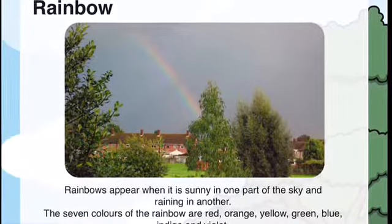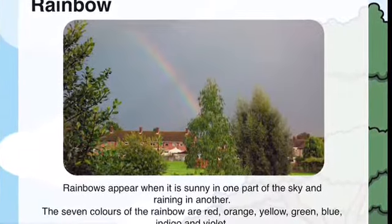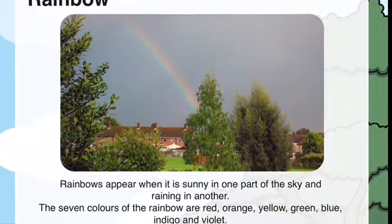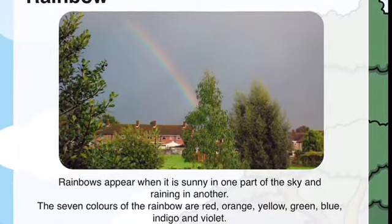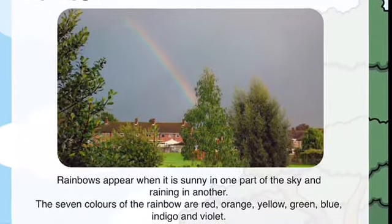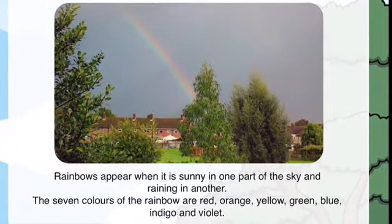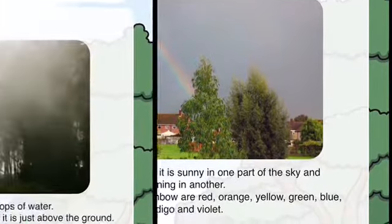Rainbows appear when it is sunny in one part of the sky and raining in another. The seven colors of the rainbow are red, orange, yellow, green, blue, indigo, and violet.